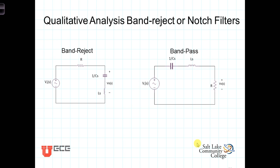We'll now look at one final family of filters, known as the band reject filter. It's easiest to understand the band reject by comparing it to the passband filter, which we've already studied. The passband filter passes a certain relatively narrow range of frequencies, and it consists of a series RLC circuit where the output voltage is taken across the resistor.